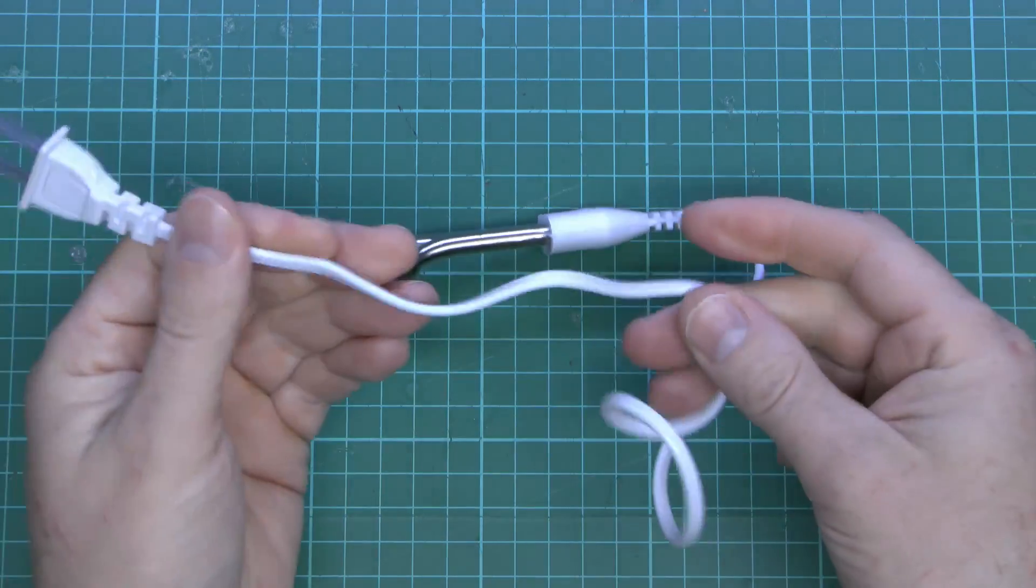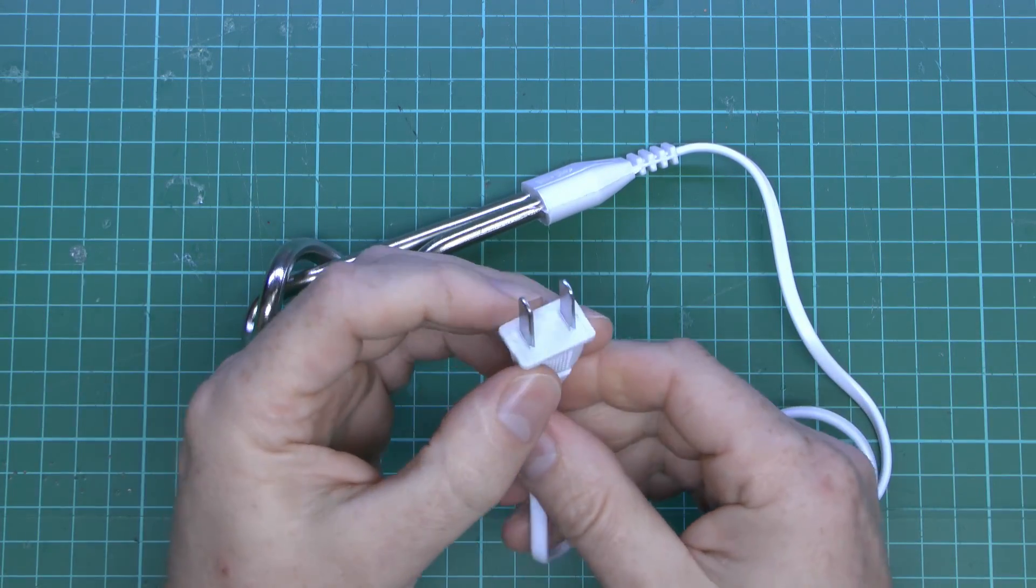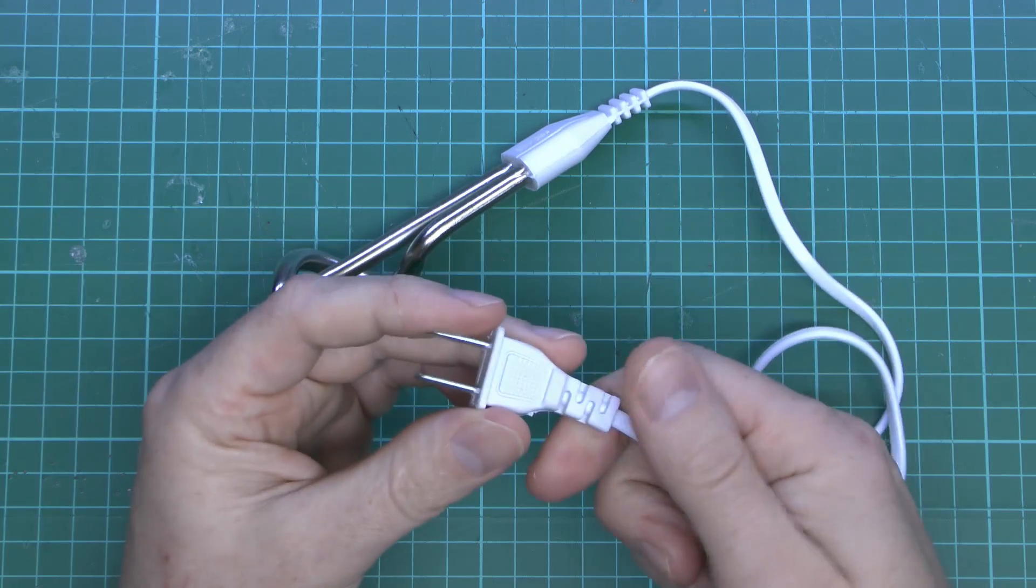And then we have this very thin looking flex here. This can't be more than 0.5 millimeters, probably even smaller, and then this two prong device on the end here to shove into the socket.